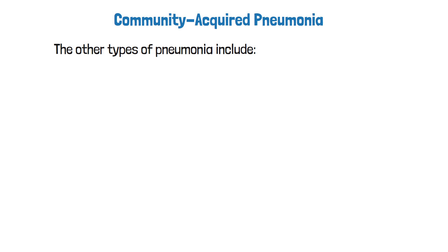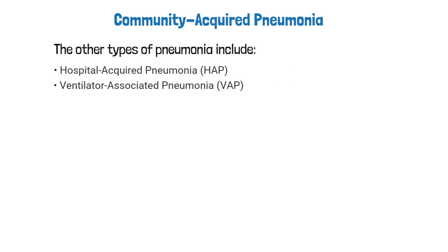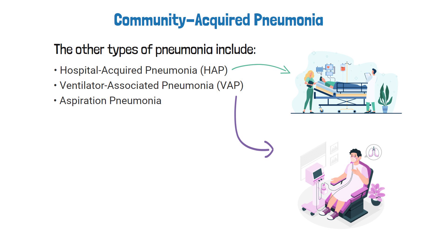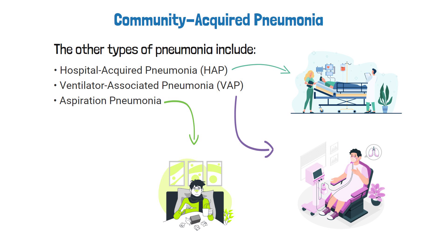The other types of pneumonia include hospital acquired, ventilator associated, and aspiration pneumonia. The specific type is classified according to how the patient acquires the disease. Hospital acquired pneumonia is when the patient gets it during a hospital stay. Ventilator associated pneumonia is when it's acquired while the patient is on a mechanical ventilator. Aspiration pneumonia is acquired when a patient aspirates bacteria into the lungs, usually from food, saliva, or stomach acid.